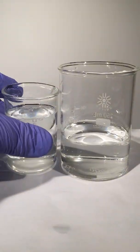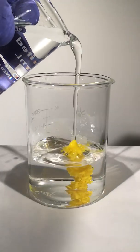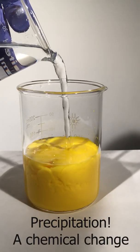But what if we combine them? We can produce a new compound, a yellow precipitate called lead iodide, which is insoluble in water.